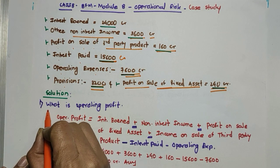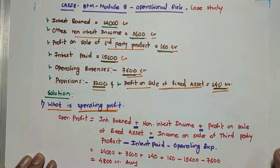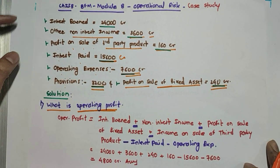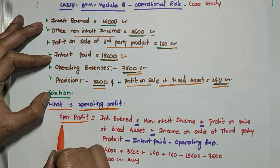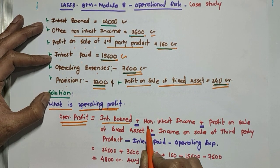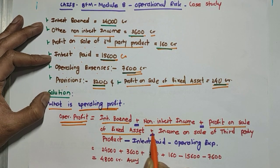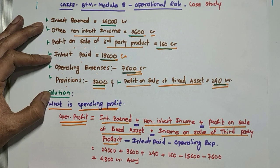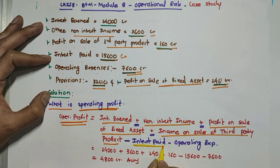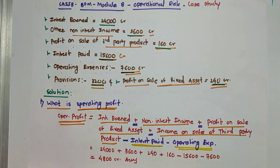The first question is: what is the operating profit? The formula for operating profit is very important. Operating profit is nothing but interest earned, plus non-interest income, plus profit on sale of fixed asset, plus income on sale of third party product, minus interest paid, minus operating expenses.